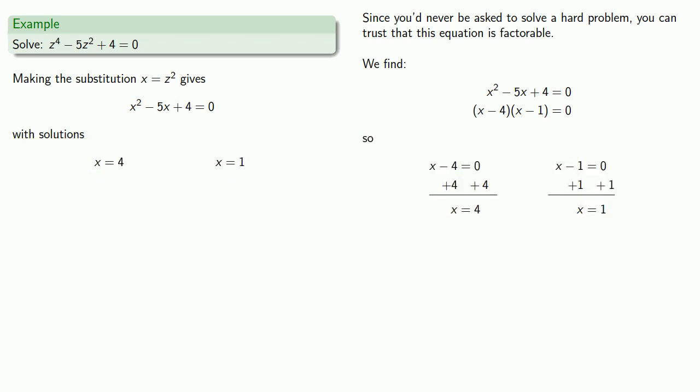We want to solve this equation. What we've found so far is that x equals 4, or x equals 1. But our original equation is in z, and we need to find the value of z. Because we've written down x equals z squared.